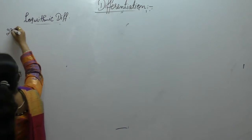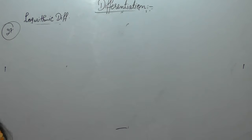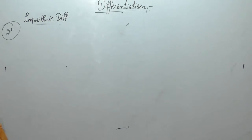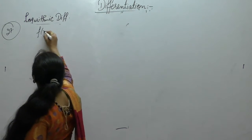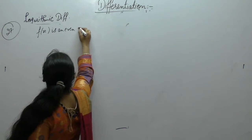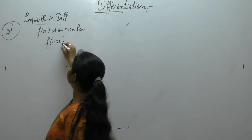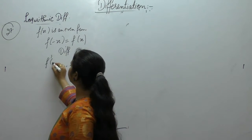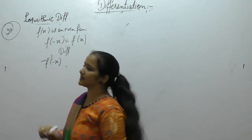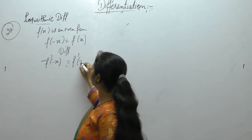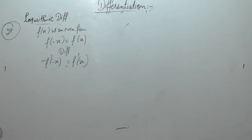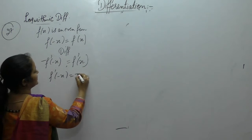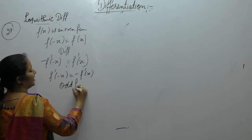Now the next problem: prove that the derivative of an even function is an odd function, and the derivative of an odd function is an even function. If f(x) is an even function, then f(-x) = f(x). Now differentiate it. The derivative of the left side gives f'(-x)·(-1) = f'(x), so f'(-x) = -f'(x). This is an odd function.